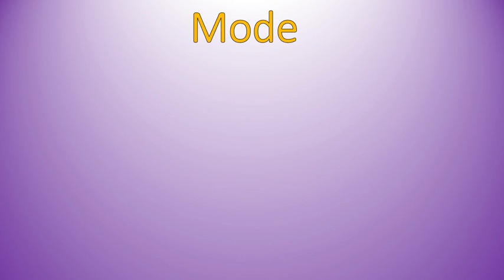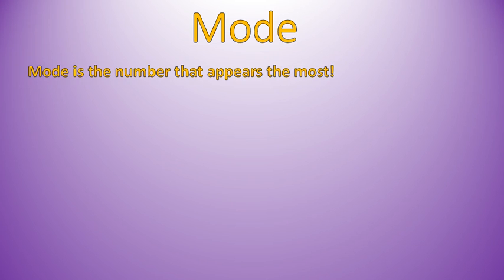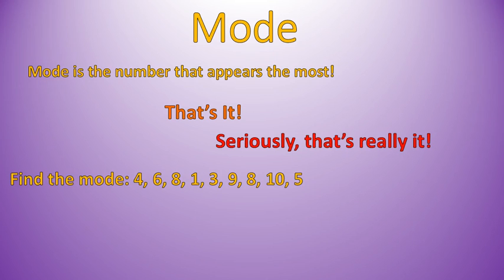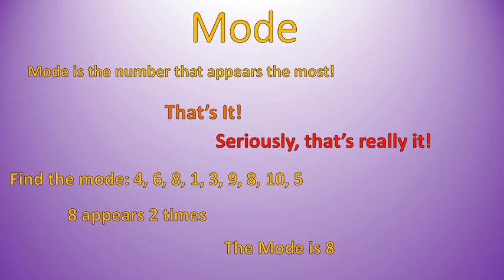Our third measure of center is called the mode. The mode is the number that appears the most. That's it — seriously, that's really it. All you need to do is find which number appears the most. So if I have this list of numbers and I'm asked to find the mode, I look at this list and say 8 — it appears two times, all the other numbers only appear one time. Therefore, the mode is 8.